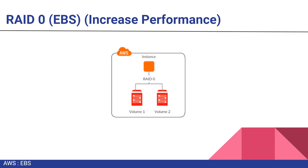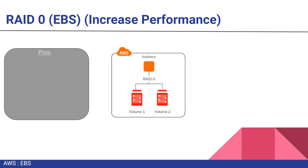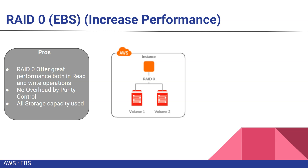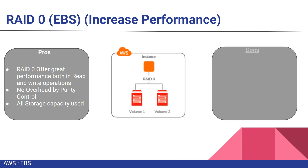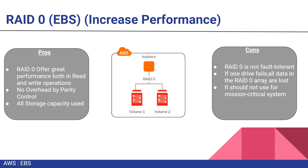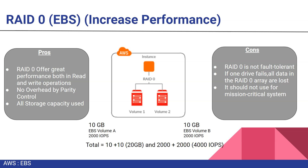For RAID 0 with EBS: an instance has two volumes, Volume 1 and Volume 2, and you configure OS-level RAID 0. The pros are the same - you get higher throughput and all capacity is used. As an example, if you have a 10 GB EBS Volume A and a 10 GB EBS Volume B, each supporting 2000 IOPS, in RAID 0 you will get 20 GB of storage and 4000 IOPS total. This increases your performance.